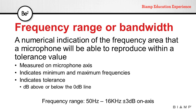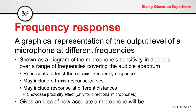For instance, we can have a microphone that specifies a frequency range from 50 Hz to 16 kHz, plus or minus 3 dB on axis. The frequency response, on the other hand, is a graphical representation of the microphone's output level at different frequencies. It is shown as a diagram of the microphone sensitivity in decibels over the range of frequencies covering the audible spectrum.